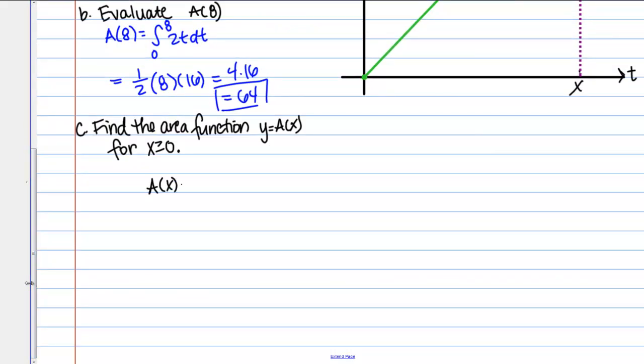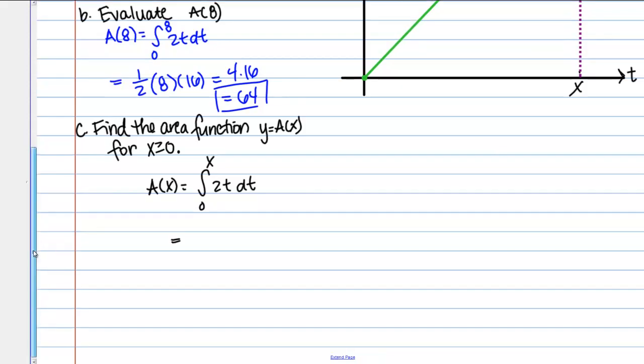I'm told that A(x) is the integral from 0 to x of 2t dt. Let's see if I can just write down a function for that, one that doesn't involve the integral sign. What have we been doing so far?